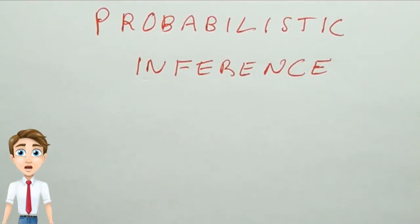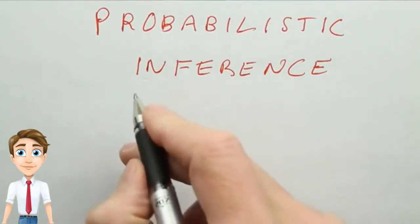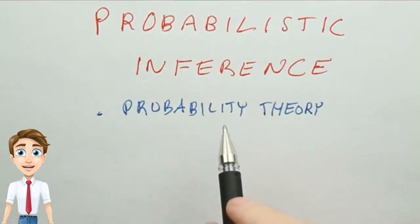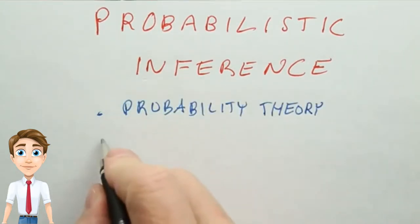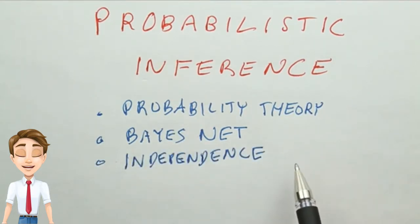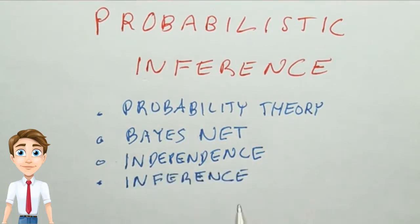Welcome back. In the previous unit, we went over the basics of probability theory and saw how a Bayes network could concisely represent a joint probability distribution, including the representation of independence between the variables. In this unit, we will see how to do probabilistic inference.